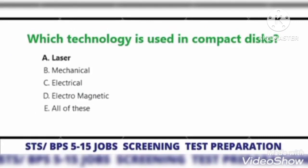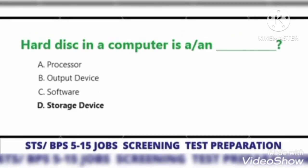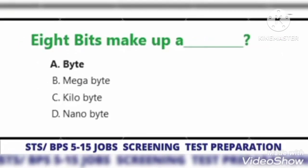Which technology is used in compact disk? Laser. Hard disk is a non-volatile storage device. 8 bits make up a byte — one byte.